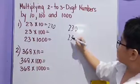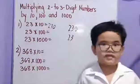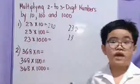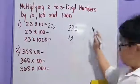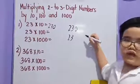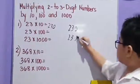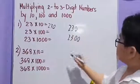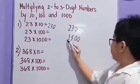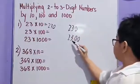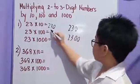Twenty-three times one hundred equals: twenty-three times one, we have twenty-three. Let's count how many zeros we have — one, two. Let's write two zeros: one, two. Then we have two thousand three hundred.